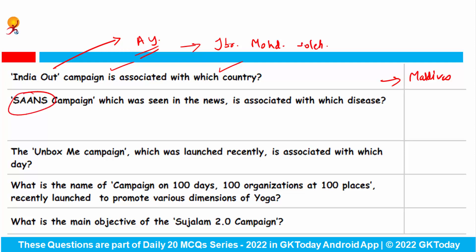The SAANS campaign, which was seen in the news recently, is associated with which disease? SAANS stands for Social Awareness and Action to Neutralize Pneumonia Successfully. This campaign is related to the disease pneumonia. Recently, Karnataka state has implemented it. The Chief Minister of Karnataka is B.S. Bommai.